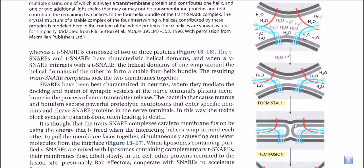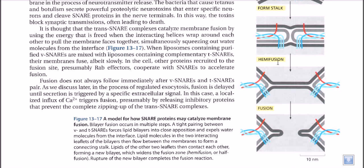After the stalk stage fusion, the v-SNARE and t-SNARE elongate in opposite directions — one fiber going right and the other going left — pulling the membranes outward. After this tight pulling, we reach the hemifusion stage, where the outer leaflets have merged but the inner membrane still separates the two compartments.